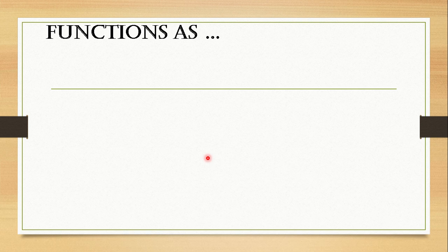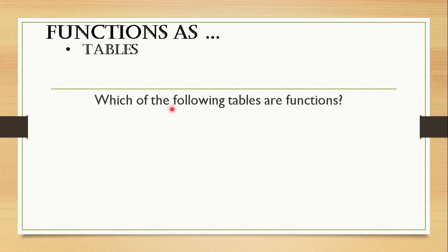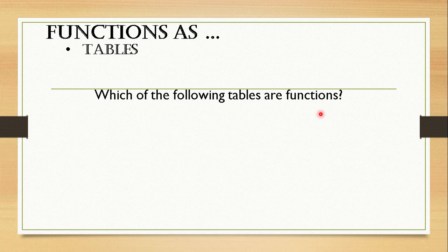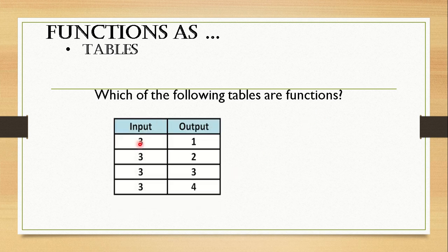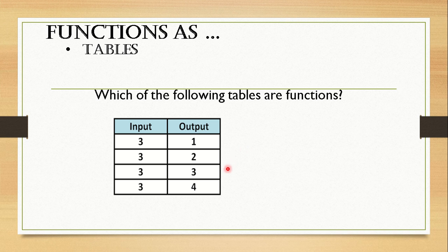So how about function as tables? Which of the following tables are functions? Starting with this table: we have input 3, 3, 3, 3 and for our output 1, 2, 3, and 4. This means the ordered pairs are (3,1), (3,2), (3,3), and (3,4). Do you think it is a function? The answer is no, it is not a function.